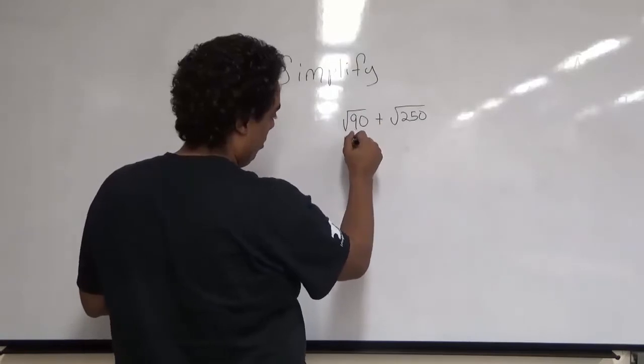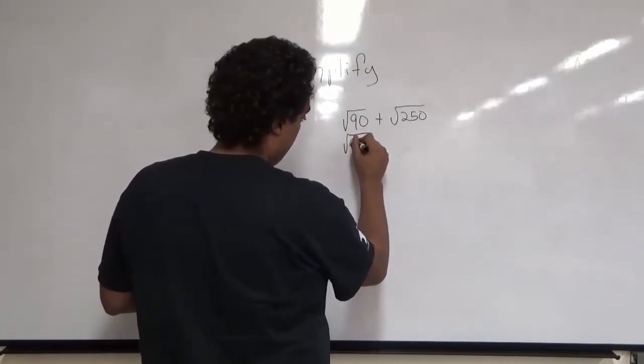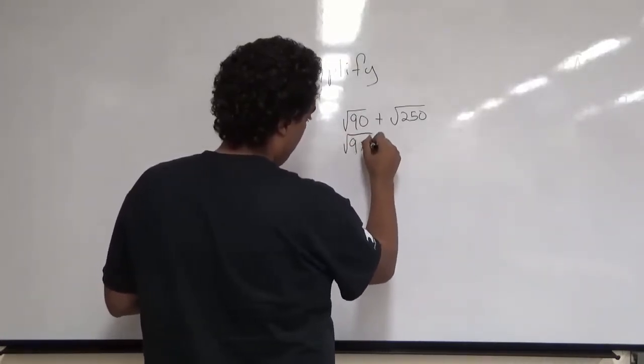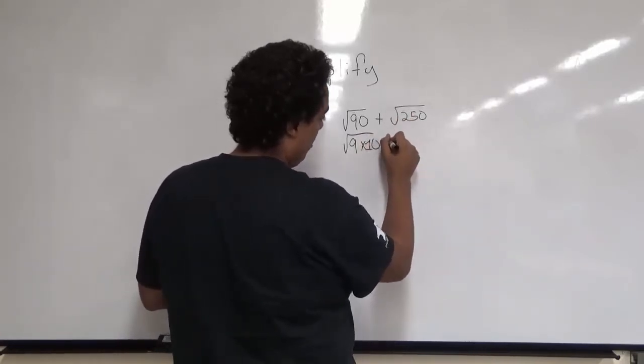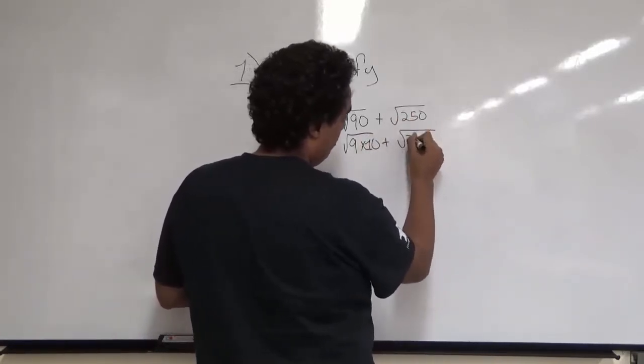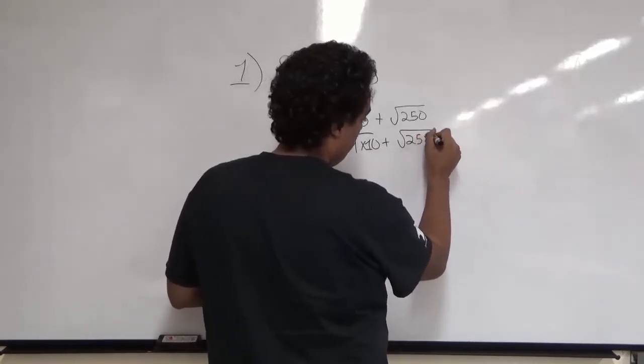90 we can rewrite as the square root of 9 times 10, and 250 we can rewrite as the square root of 25 times 10.